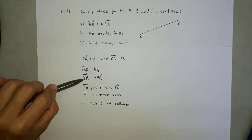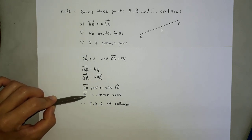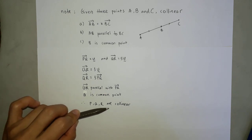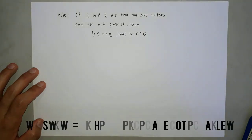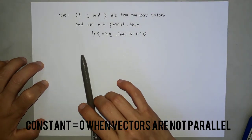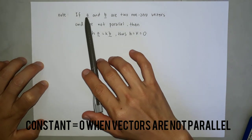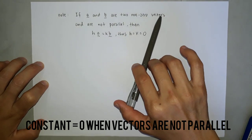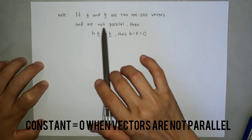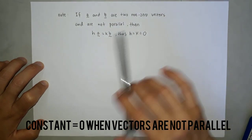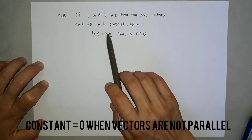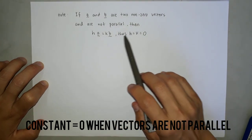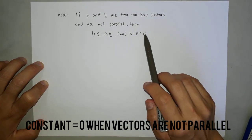and appears here. So it is common point. Lastly, I can conclude that P, Q, R are collinear. Now let's discuss the condition where vector A and vector B are two non-zero vectors and are not parallel. So then, HA equals to KB, H and K are constants. Thus, H equal to K equal to zero.